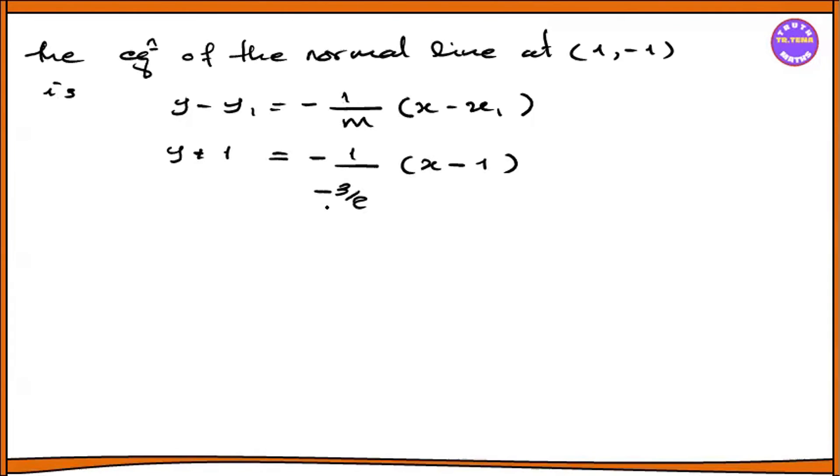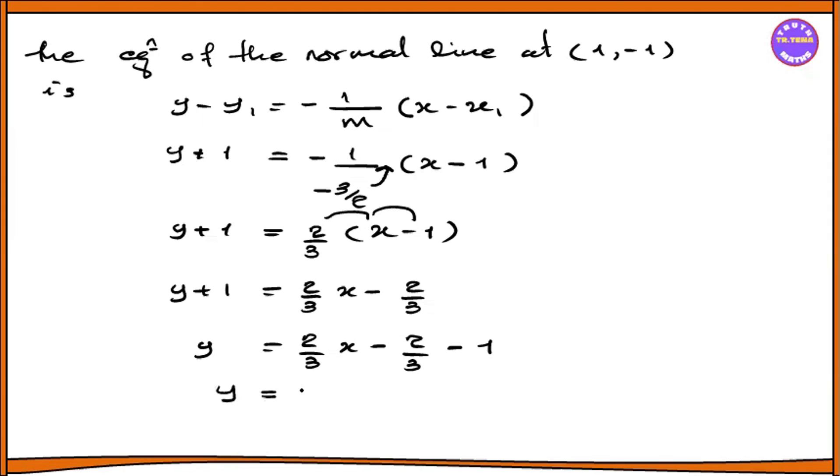So y plus 1 equals 2/3 x minus 2/3. Then y equals 2/3 x minus 2/3 minus 1. That gives y equals 2/3 x minus 5/3.